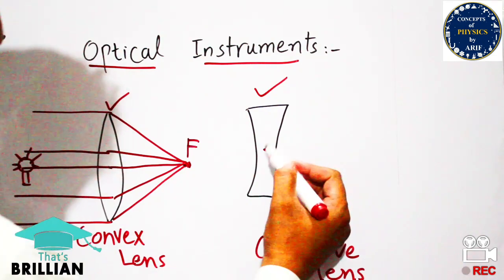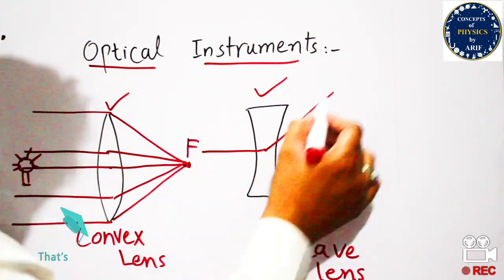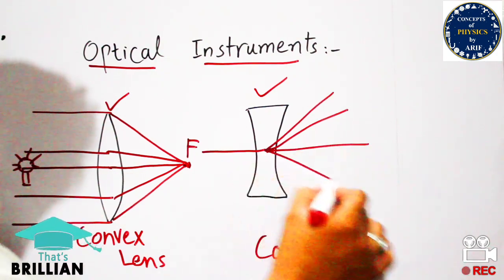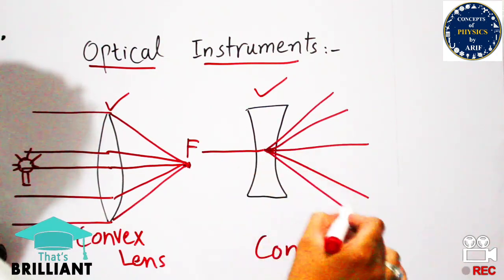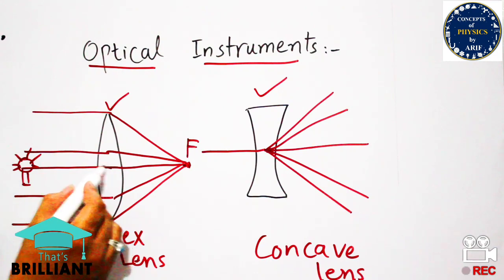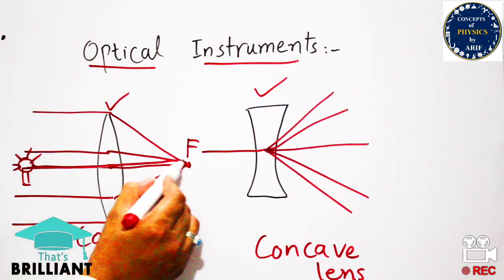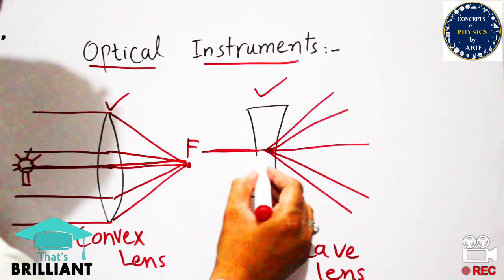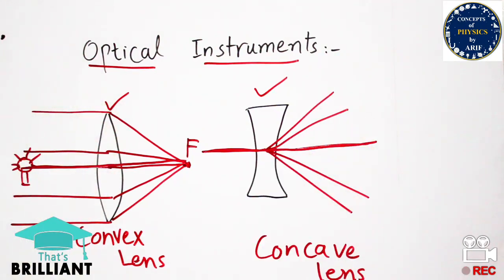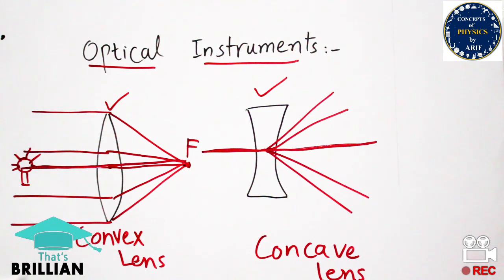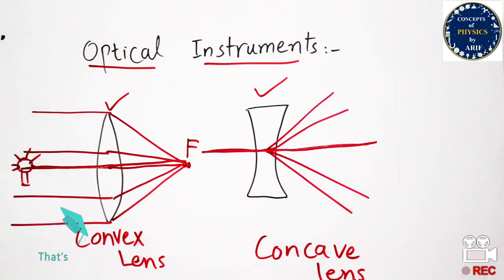This is a property of the convex lens. But in the case of the concave lens, all the waves disperse after passing through the concave lens. This is the basic property of the concave lens. We need to understand the properties and characteristics of the convex lens and concave lens respectively.